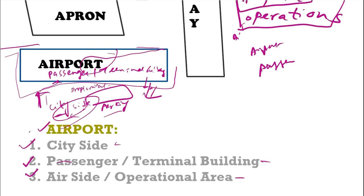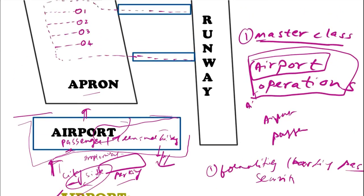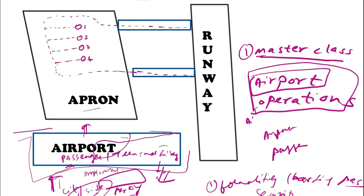Now we'll move on to the passenger or terminal building. This is the place in the airport where the passenger will be entering into the building, completing all the formalities of getting the boarding pass, going to the security check, and then later going from outside this building to the apron.